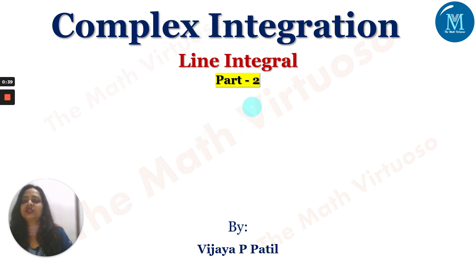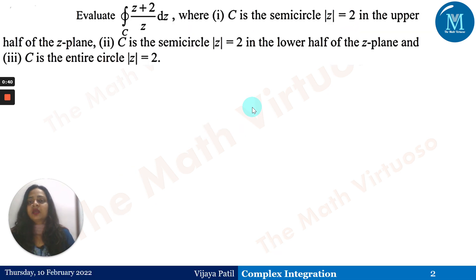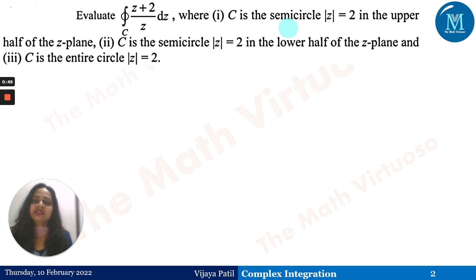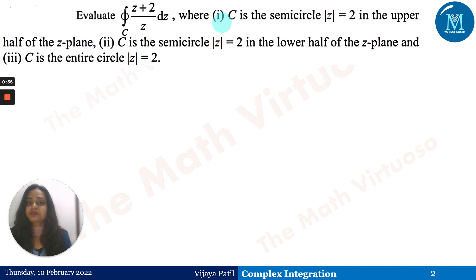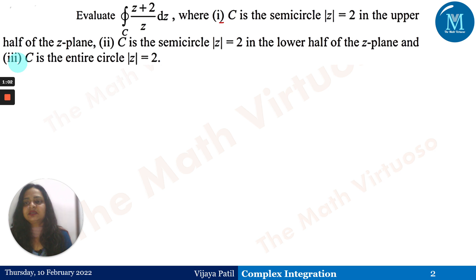The problem is: evaluate the integration of (z+2)/z dz over the curve C. The first part has C as a semicircle |z|=2 in the upper half of the z-plane. The second part has C as a semicircle |z|=2 in the lower half of the z-plane. The third case has C as the entire circle |z|=2.